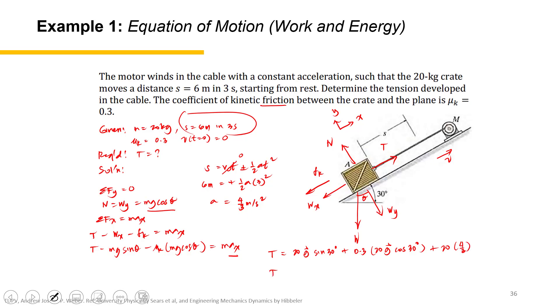That equals 175.74 N. So this is the tension required if you want to move the crate six meters in three seconds, or to move the 20 kg crate at the rate of four thirds meters per second squared.